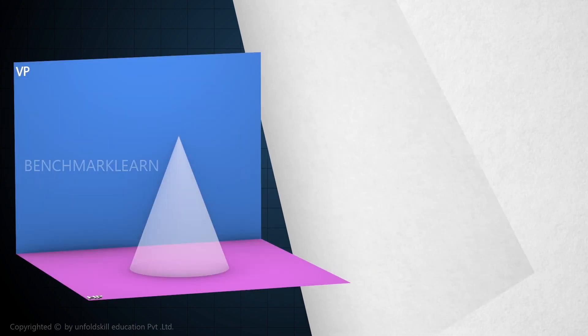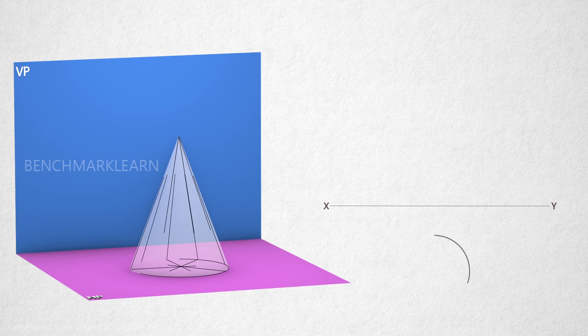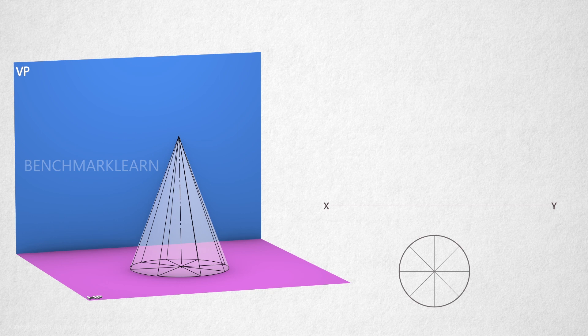First draw the XY line. It is given that the cone is resting on HP. So draw the top view of the cone. Consider 8 generators by dividing the circle into 8 equal parts.